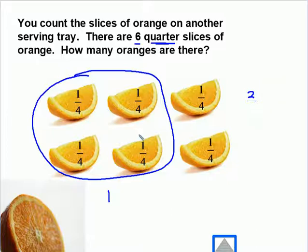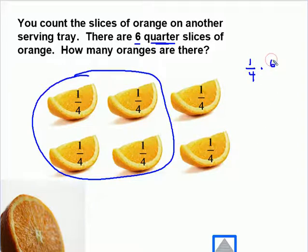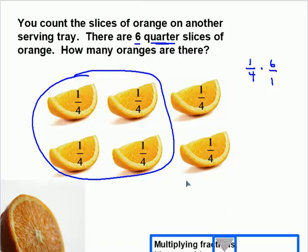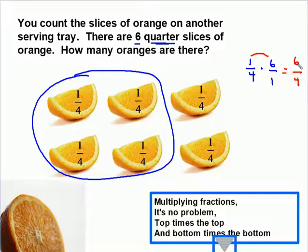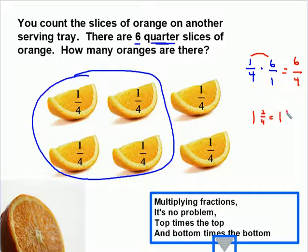Let's see what that is using the actual multiplication process. That's one-fourth times six. Remember that six, since it's a whole number, is the same as six over one. Multiplying fractions: we multiply the top across the top, which is six times one, and that gives us six. And the bottom across the bottom gives us four. We can convert it to a mixed number: four goes into six one whole time with two left over — one and two-fourths. And one and two-fourths is the same as one and one-half.